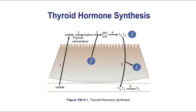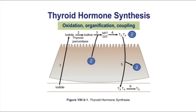This figure looks at thyroid hormone synthesis. We'll follow the steps in the process and also look at where our drugs are going to interfere. You start with the uptake of iodide. Once inside the thyroid gland, iodide is converted into iodine by thyroid peroxidase. You then undergo the organification step to form MIT and DIT and the coupling of T3 and T4 to thyroglobulin.